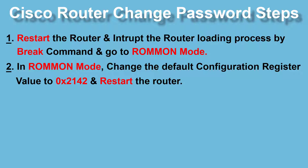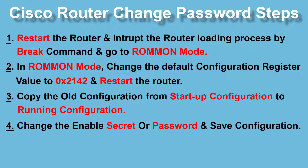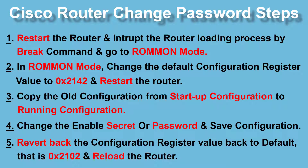After the router restarts, copy the old configuration from startup configuration to running configuration, because we don't want to lose the old router configuration. Then change the enable secret or any other password on the Cisco router and save the settings. The most important step is to revert the configuration register value back to the default, which is 0x2102, and then reload the router.